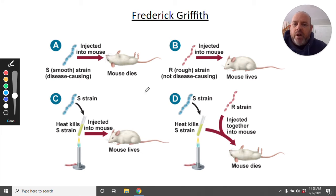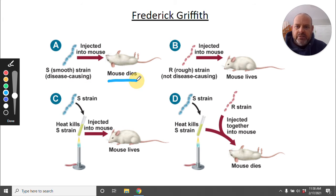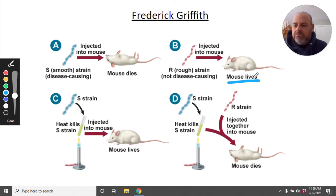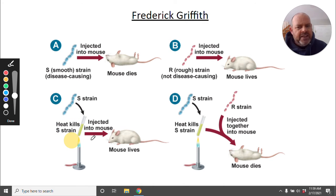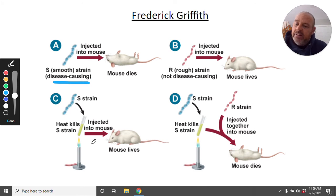These were strains that cause pneumonia. So if you inject the disease-causing S strain into the mouse, the mouse dies. If you inject the rough strain, the mouse lives. Then they took the S strain — the bad one — and used heat to kill it, then still injected that dead S strain into the mouse. The mouse lives. So they took the disease-causing one, killed it with heat, still injected it, and nothing happened — mouse lives.